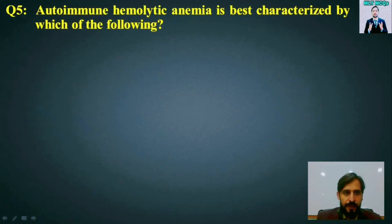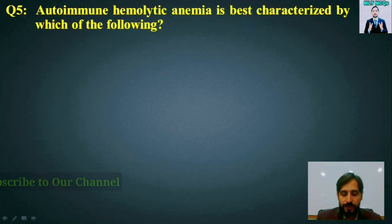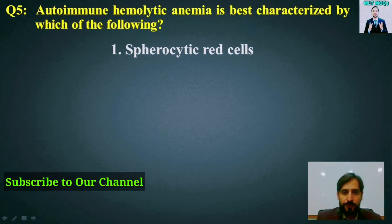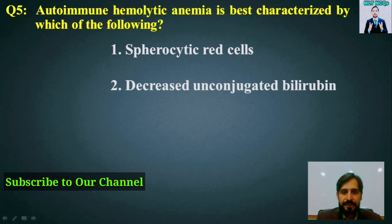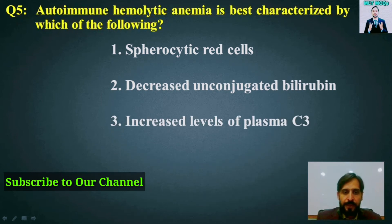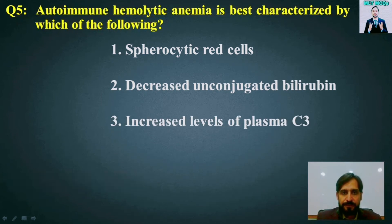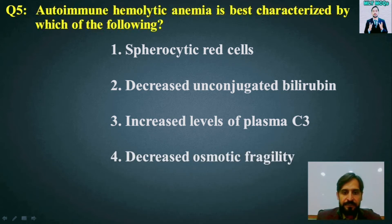MCQ number 5: Autoimmune hemolytic anemia is best characterized by which of the following? Options are: spherocytic red cells, decreased unconjugated bilirubin, increased level of plasma C3, or decreased osmotic fragility. The right answer is option number 1 — spherocytic red cells.